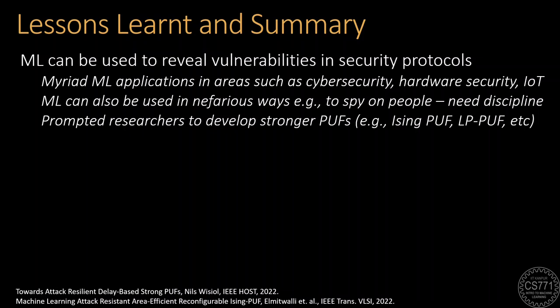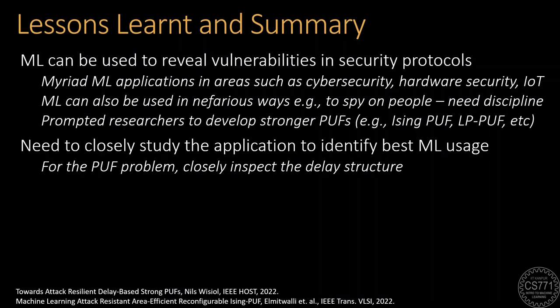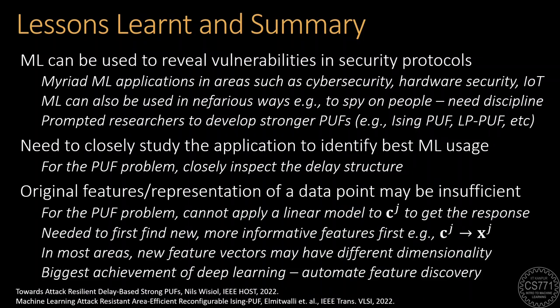This case study also taught us that before we can apply machine learning algorithms, we need an in-depth understanding of the application we are trying to solve. For the arbiter PUF case, it was only because we did all the hard work to painstakingly analyze the delays and exit times that we could figure out that a linear model could crack that PUF. But perhaps most importantly, this case study taught us the importance of using good features when using machine learning models. A linear model applied to the original challenge vector c_j with all the zeros and ones would not have been able to predict the response. It is only when we re-encoded each bit and took the cumulative products to create the new, more informative feature vector x_j that a linear model was able to predict the response. Finding the most informative features is one of the key steps to successfully applying ML to solve a given problem. In fact, being able to automatically discover informative features can be seen as one of the biggest achievements of deep learning.